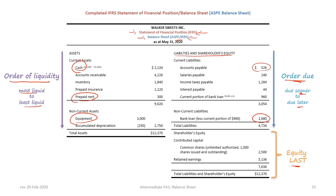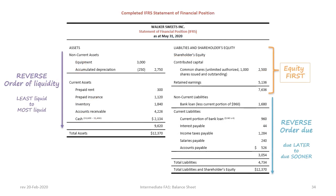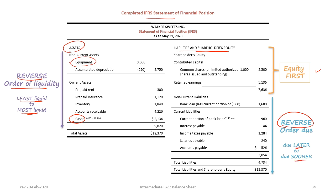Alternatively under IFRS we can reverse the order. On the asset side, we present in reverse order of liquidity — least liquid to most liquid — starting with equipment and proceeding through to cash. On the liabilities and equity side, shareholders' equity comes first, followed by liabilities in reverse order of due date: non-current liabilities first, with accounts payable last as it is due the soonest.